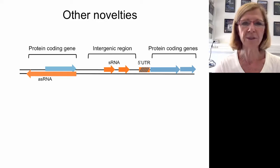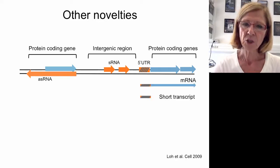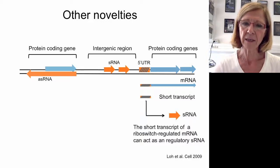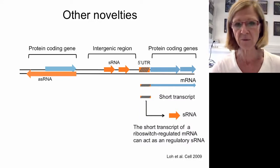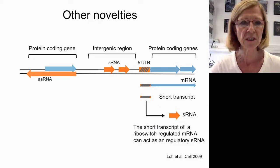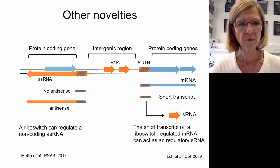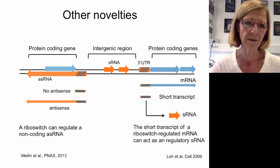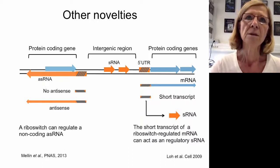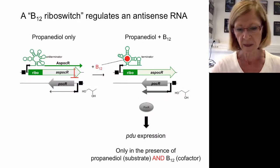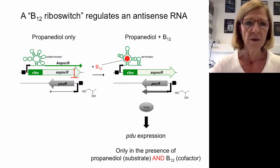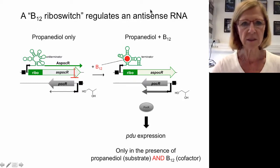We found other novelties. For example, we found that short transcripts generated by riboswitches are not degraded — they can act as regulatory small RNAs. We found this in the case of the S-adenosylmethionine riboswitch in Listeria. We also found that riboswitches can regulate non-coding antisense RNAs, whereas riboswitches were previously described only to regulate gene-coding operons. This is the case of a B12 riboswitch which regulates an antisense RNA.